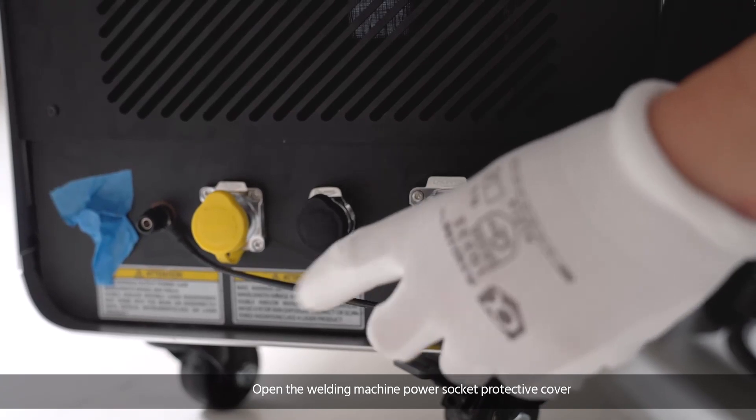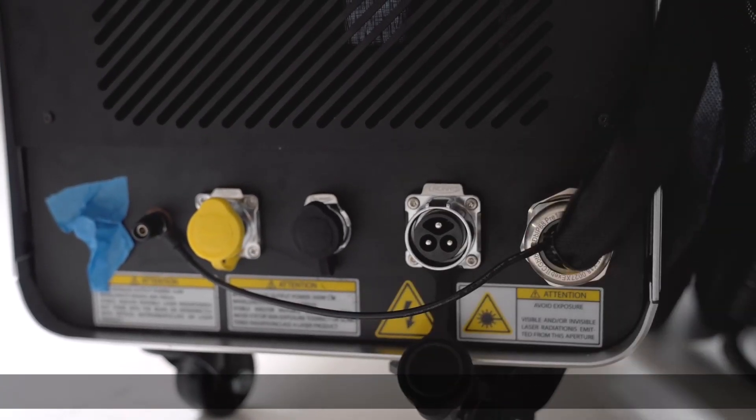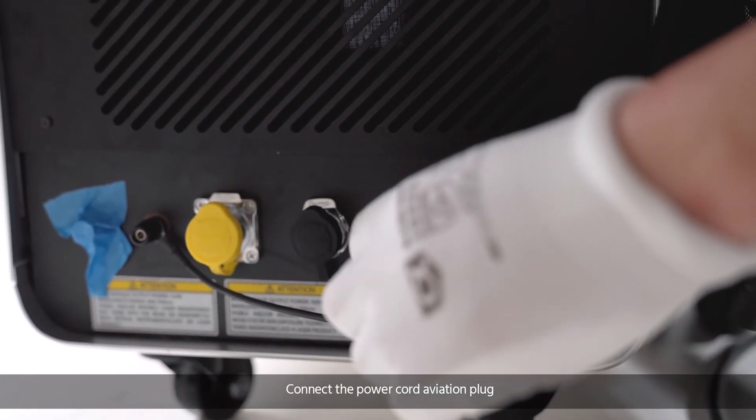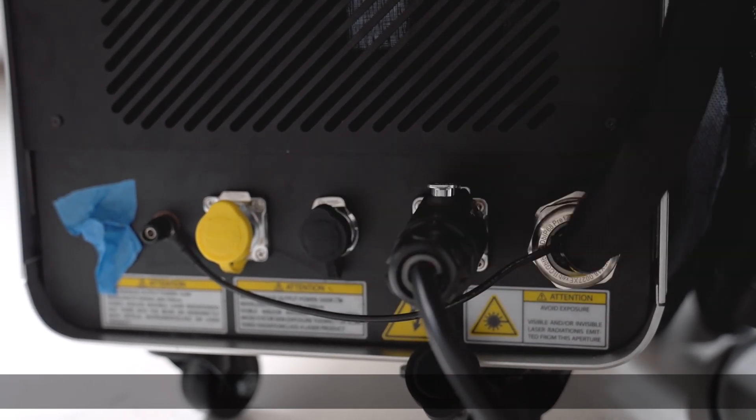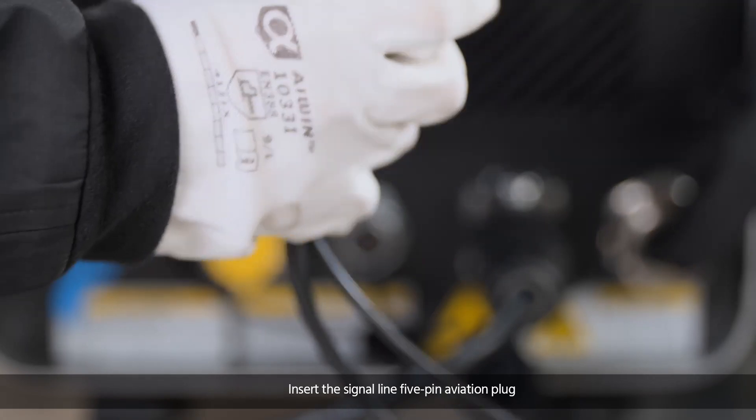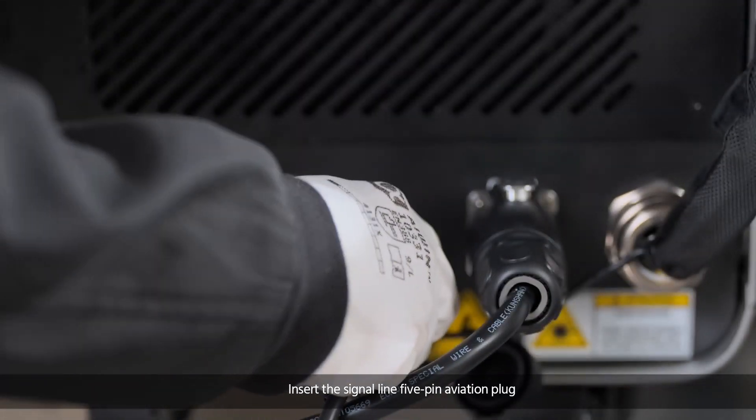Open the welding machine power socket protective cover. Connect the power cord aviation plug and insert the signal line five pin aviation plug.